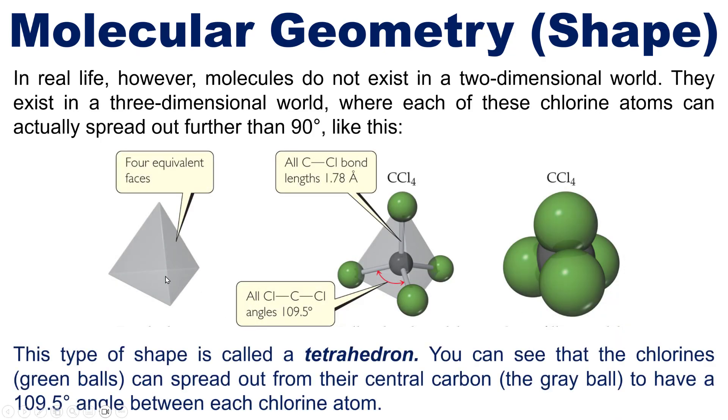Now this type of shape that's conveyed in three different drawings here is called a tetrahedron. You can see that the chlorines, that's the green spheres here, can spread out from their central carbon atom, that's the gray sphere in the middle, to have a 109.5 degree bond angle between each chlorine atom.